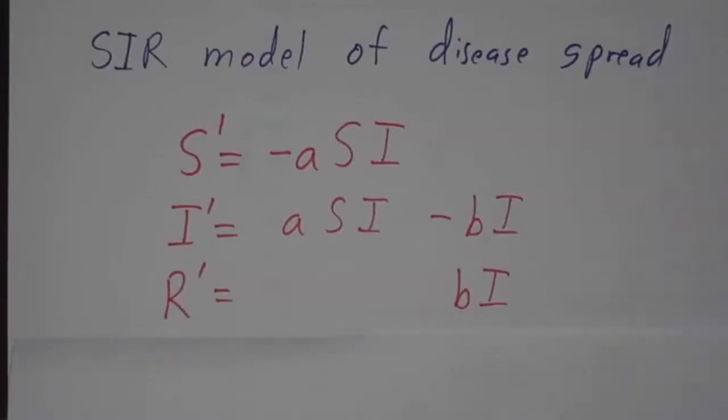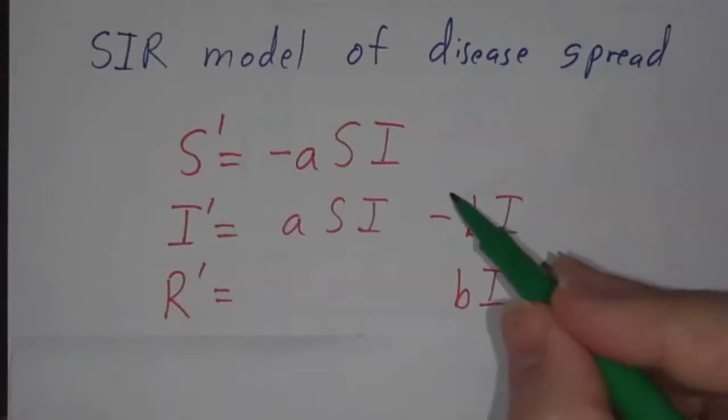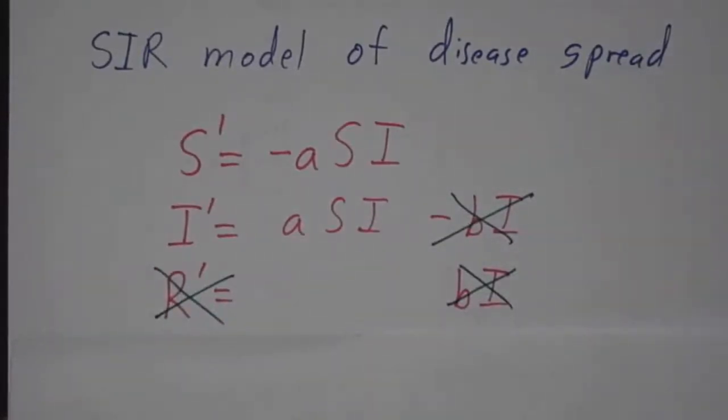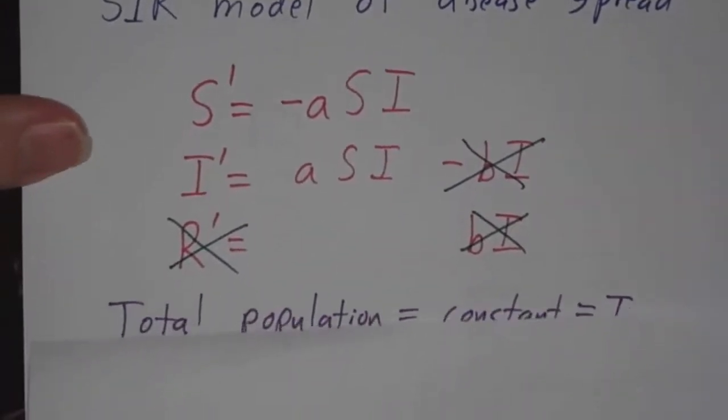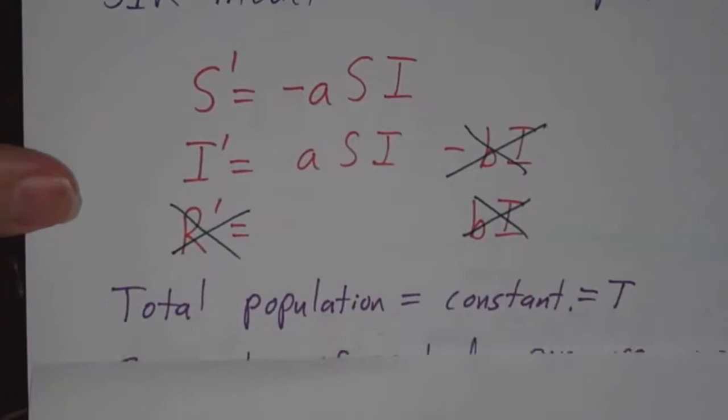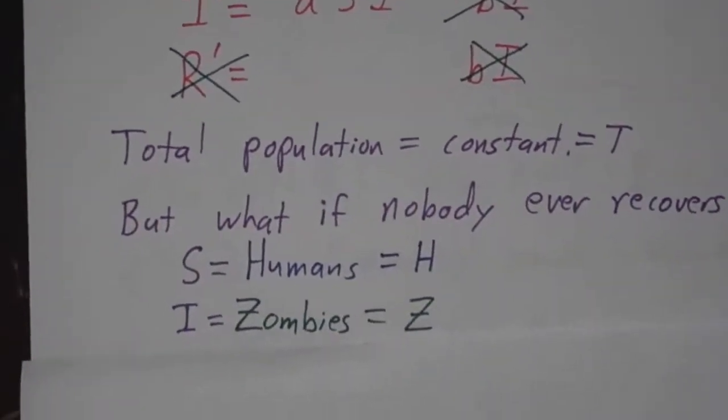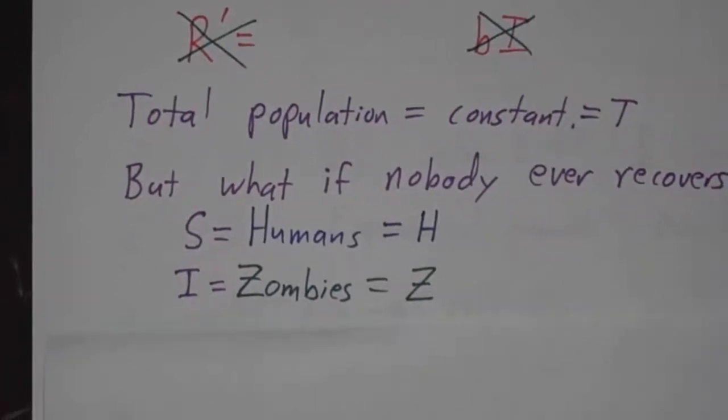Except there is no cure for zombieism. When the disease is zombieism, nobody ever recovers. So the total population is constant. We've got names for the susceptibles—people who haven't gotten the disease yet, we call them humans. People who have gotten the disease, we call them zombies.